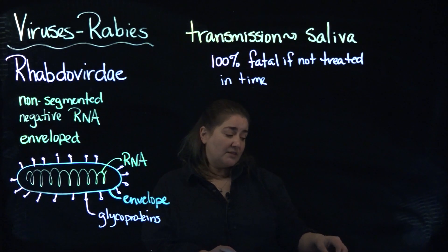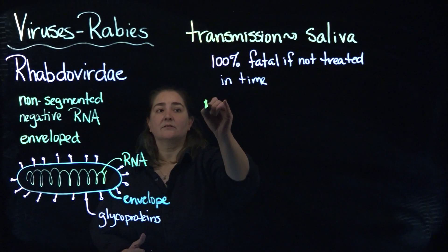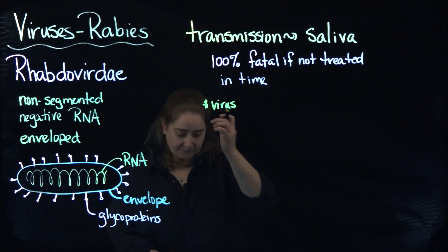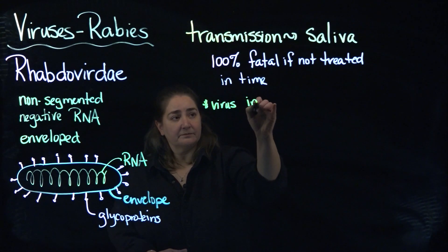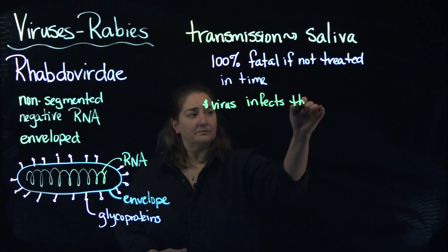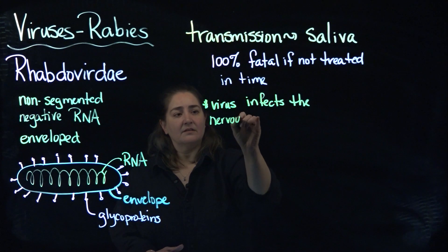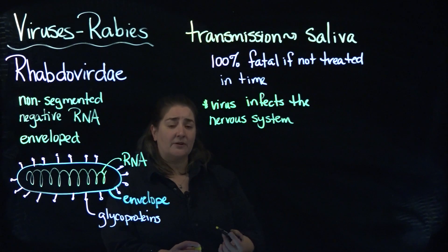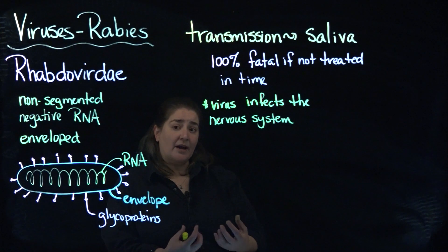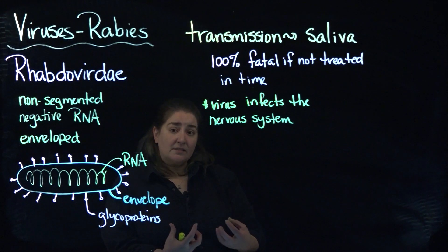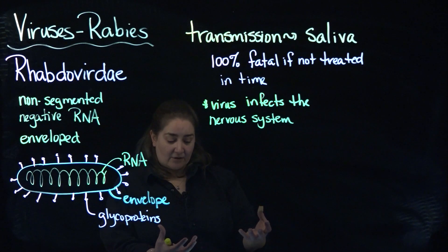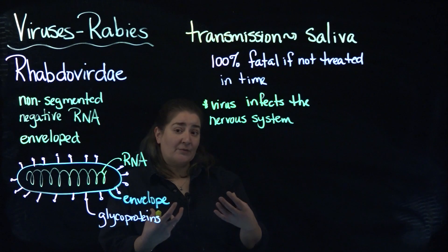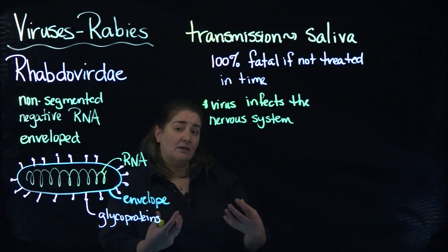What happens with the rabies virus is that it infects the nervous system, and that's where it creates all of the problems. If you've ever been around a rabid animal, they tend to be very aggressive and very scared. They get very agitated, they drool a lot, they foam at the mouth — those are all characteristics of rabies.